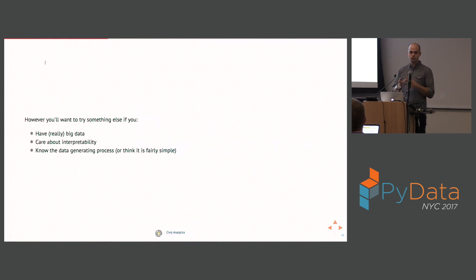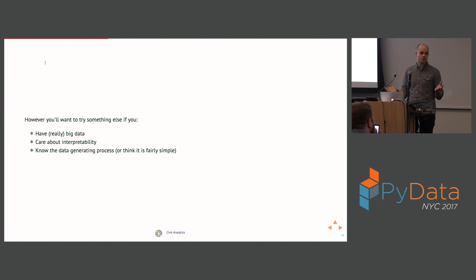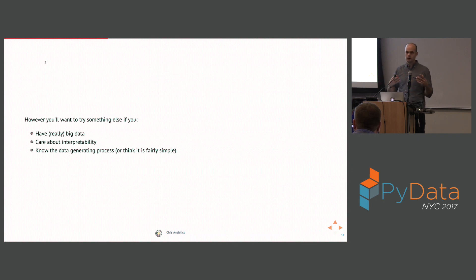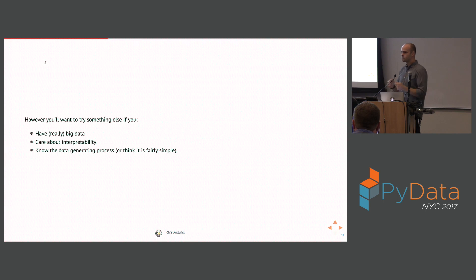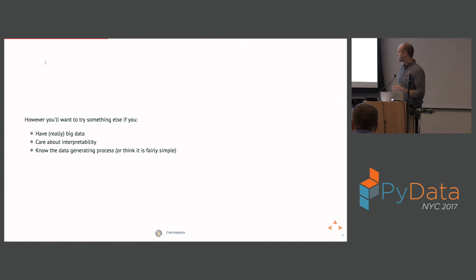There are cases where stack models might not be optimal. If you have a really huge dataset, like all images on Google, you might want something more flexible — deep neural nets are popular these days and offer essentially unlimited flexibility. If you care about interpretability — understanding how Y is explained by your X's — stack models muddy the waters because each model has different assumptions about how X explains Y. And if you know your data generating process, a stack model isn't going to give you anything beyond the correct model.